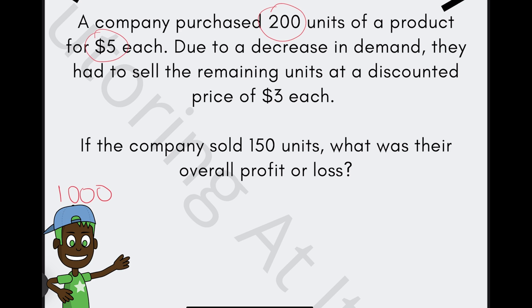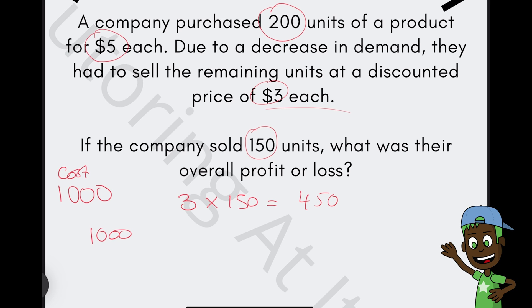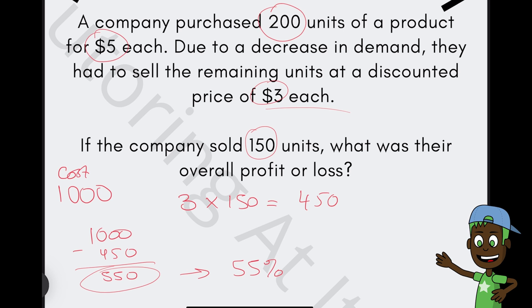And if the company sold 150 units, what was their overall profit and loss? So now that we've gone ahead and calculated the first part, let's sell our remaining ones at $3 each. We'll take our cost, which is $1,000. We'll then calculate, which was $3 each for 150. So 3 multiplied by 150 gives you $450. So we do $1,000, which is our cost, take away $450, and that gives us $550. So by looking at our profit or loss, we can see our loss is $550, which can be seen as 55%. Marvelous work.